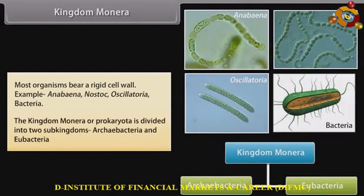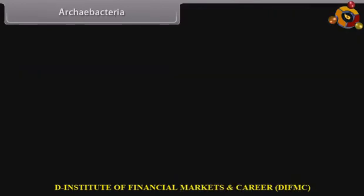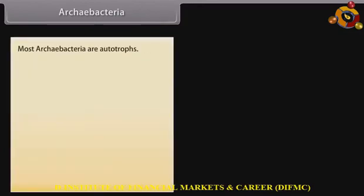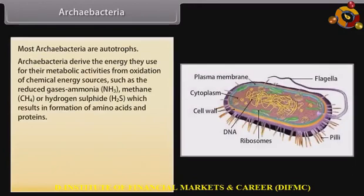Kingdom Monera, or Prokaryota, is divided into two sub-kingdoms: Archaebacteria and Eubacteria. Most Archaebacteria are autotrophs. They derive the energy for their metabolic activities from oxidation of chemical energy sources such as reduced gaseous ammonia (NH₃), methane (CH₄), or hydrogen sulfide (H₂S), which results in the formation of amino acids and proteins.